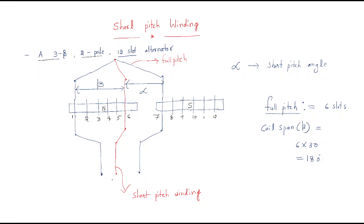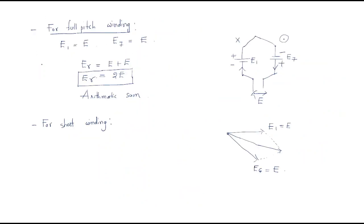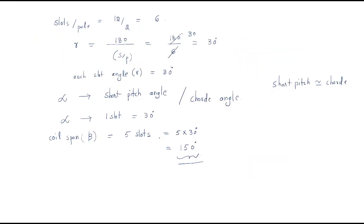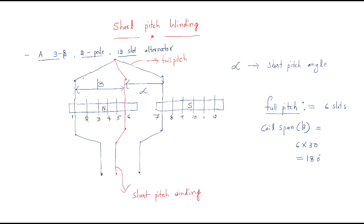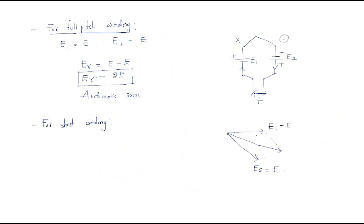Hello everyone. In the last session we discussed full pitch winding as well as short pitch winding. We already completed full pitch winding and the resultant EMF due to the two slots. Next we will enter into the short pitch winding. In short pitch winding, two slots are available — the first slot and the sixth slot.